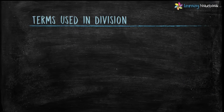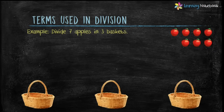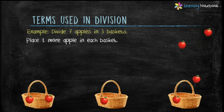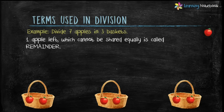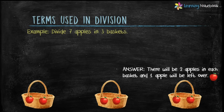The next topic is terms used in division. Let's understand with an example: divide 7 apples in 3 baskets. We will do equal sharing — place 1 apple in each basket, then 1 more apple in each basket. Now only 1 apple is left and it cannot be shared equally. Thus, this leftover apple is called the remainder. So our answer is there will be 2 apples in each basket and 1 apple will be left over.